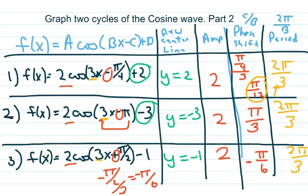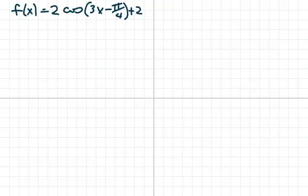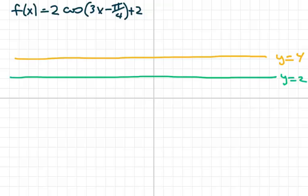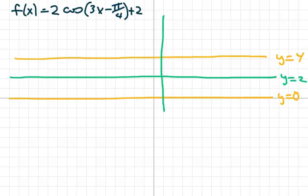So let's get started. The first one is right here. We're going to draw our new center line at y equals 2. My amplitude is 2, so from here I'm going to go up 2, which is going to be the line y equals 4, and down 2, which is the line y equals 0. My phase shift is pi over 12, so I'm going to draw that in green — just translating the axis — and put pi over 12 right here.